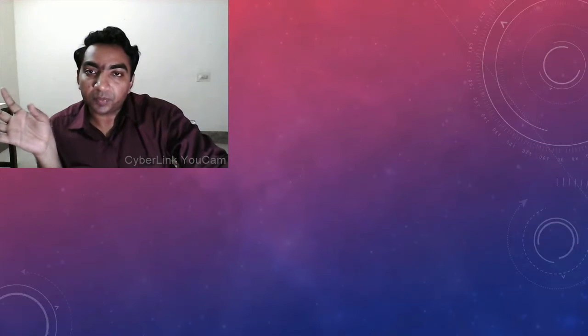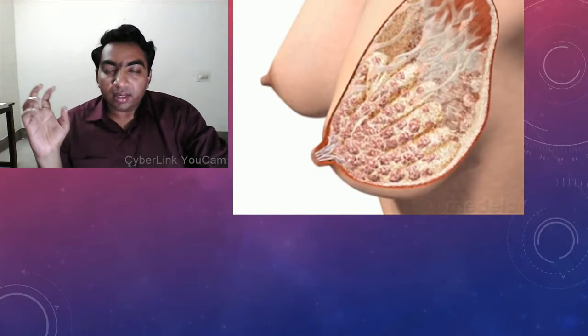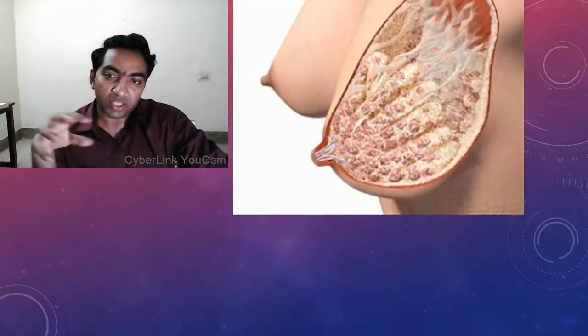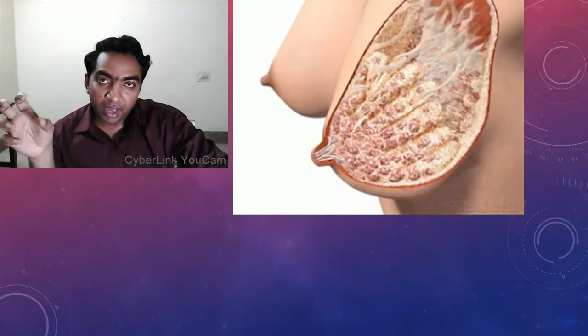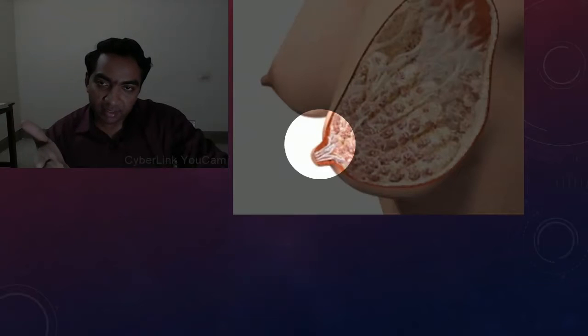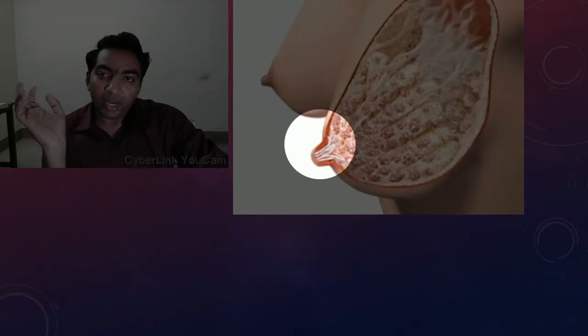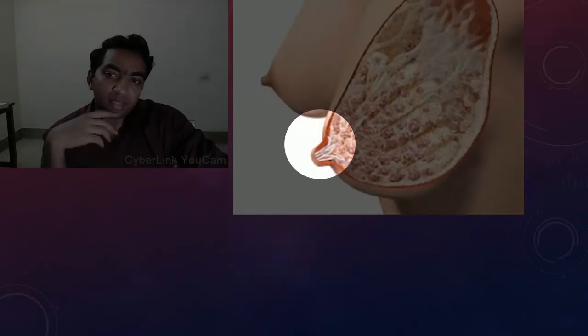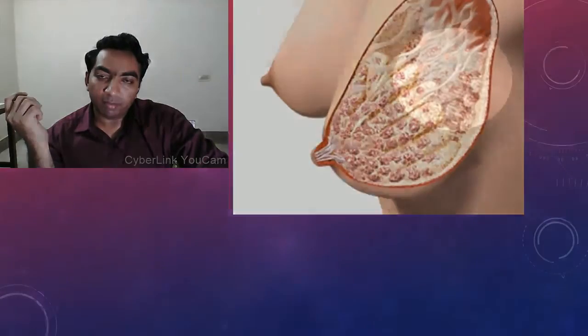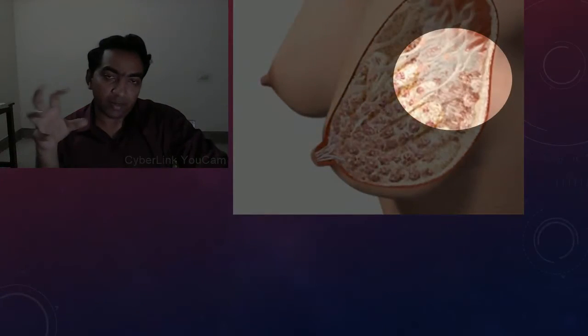This is a cross-section of the breast showing the lactiferous ducts. We can see the lactiferous ducts coming out into the nipple-areolar complex. We can also see the pectoralis major muscle and the lobules here.